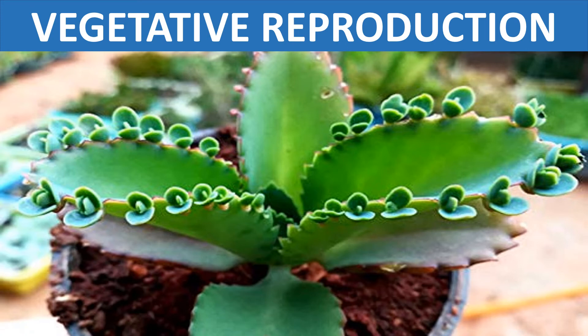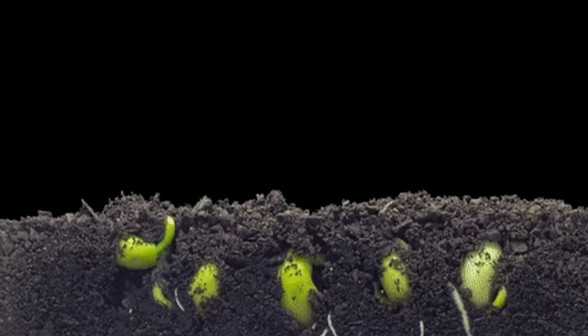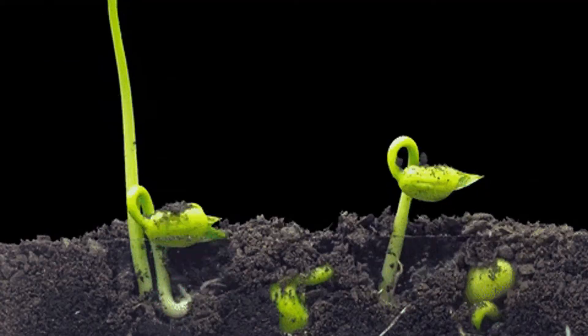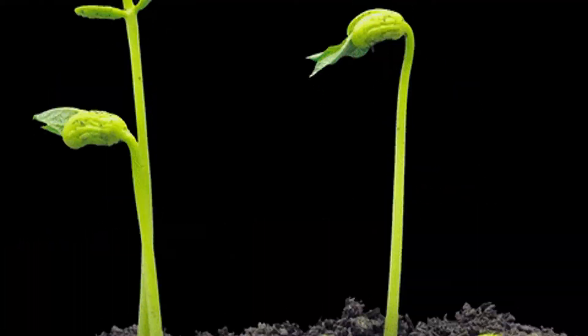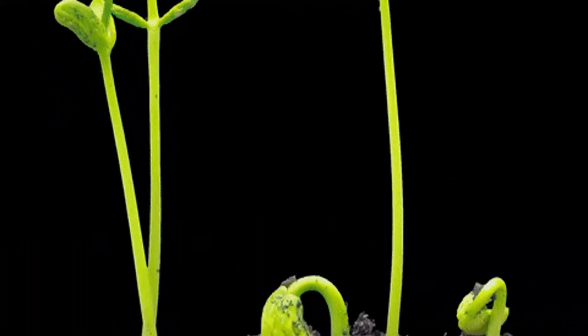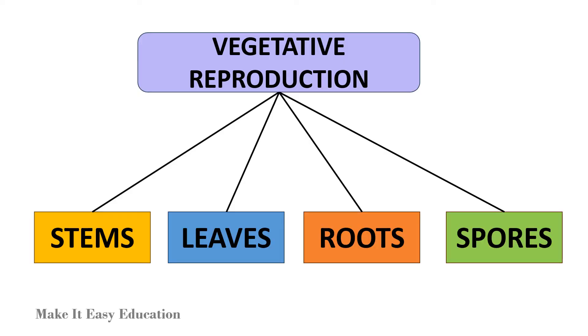Vegetative reproduction. New plants grow not only from seeds, but also from other parts such as stems, leaves, roots, and spores in certain plants. This is known as vegetative reproduction.